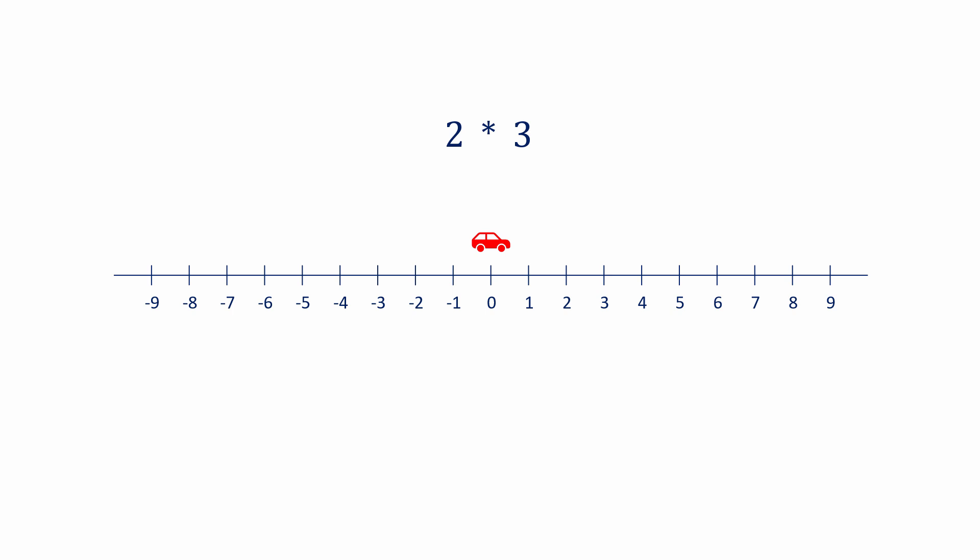To visualize multiplying two positive numbers together, like 2 times 3, we can imagine this car moving two places to the right three times.